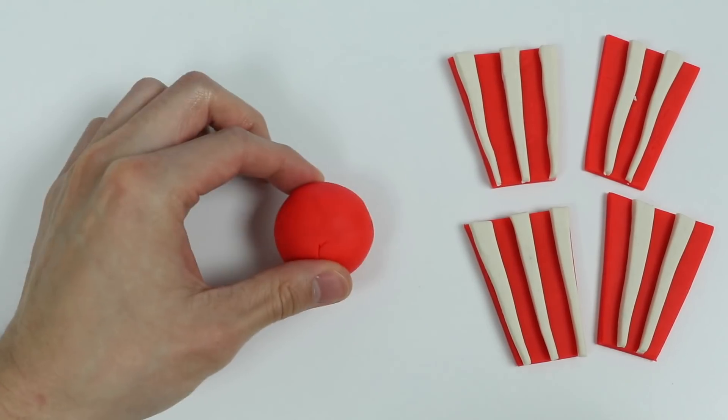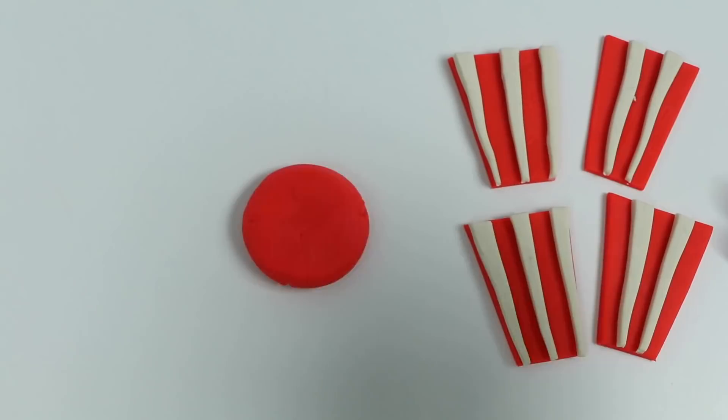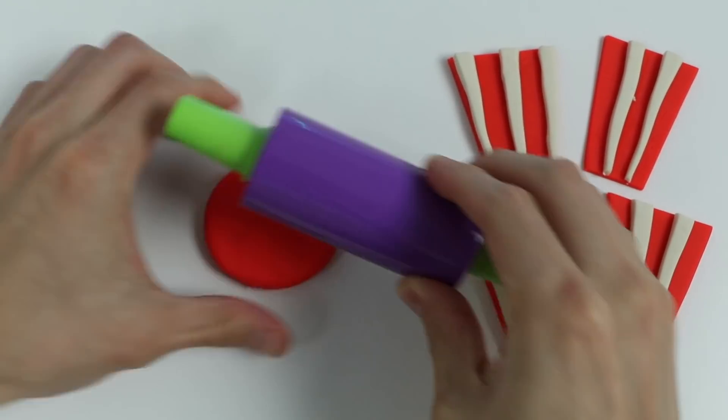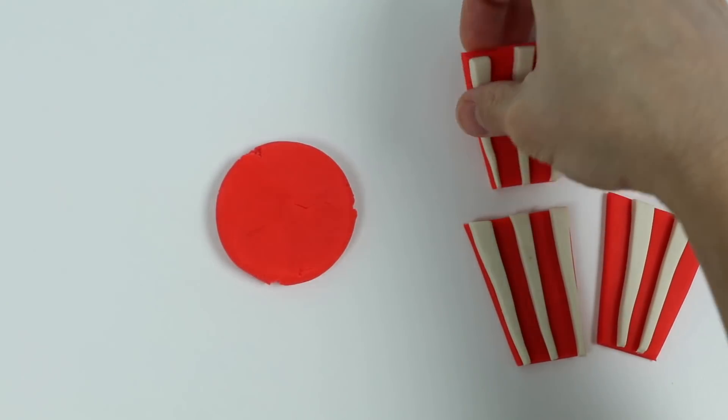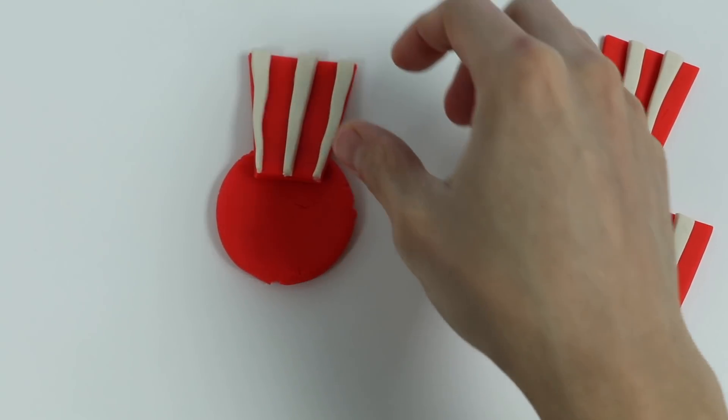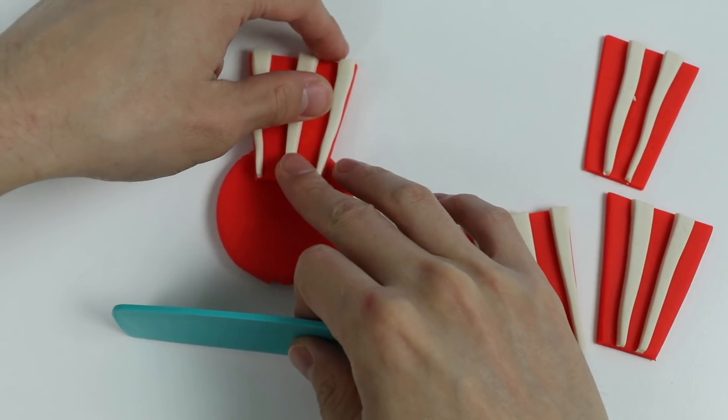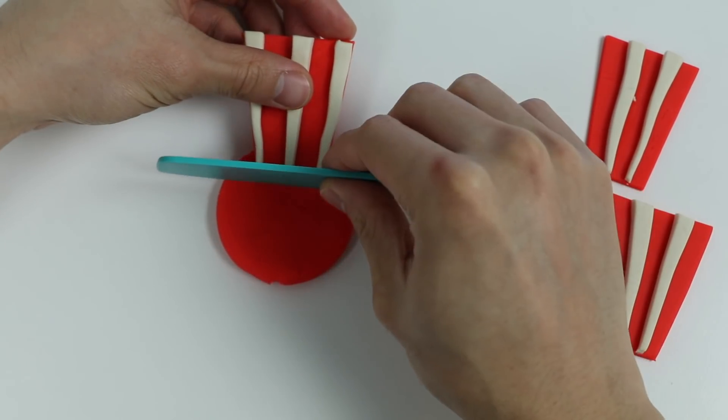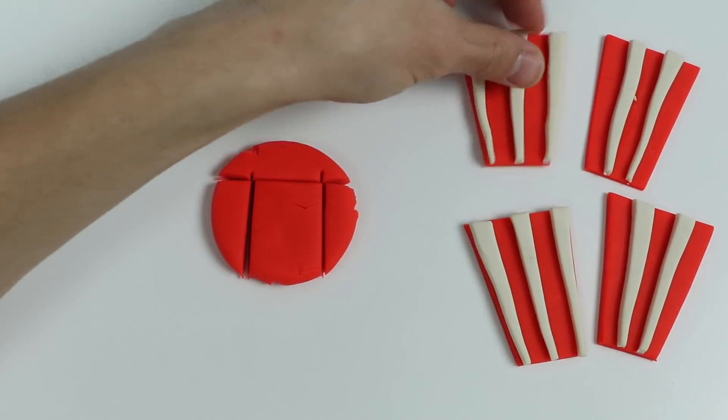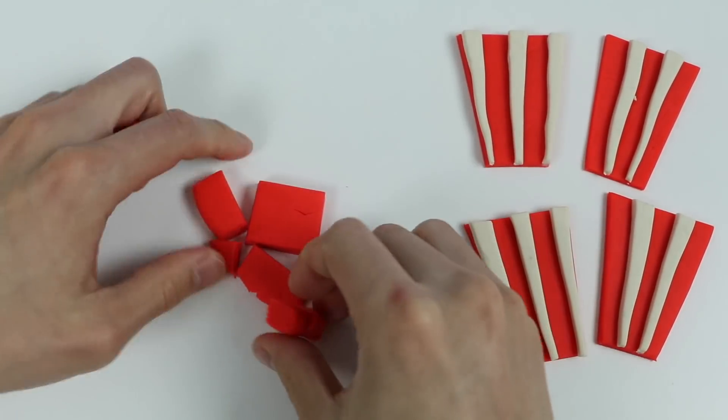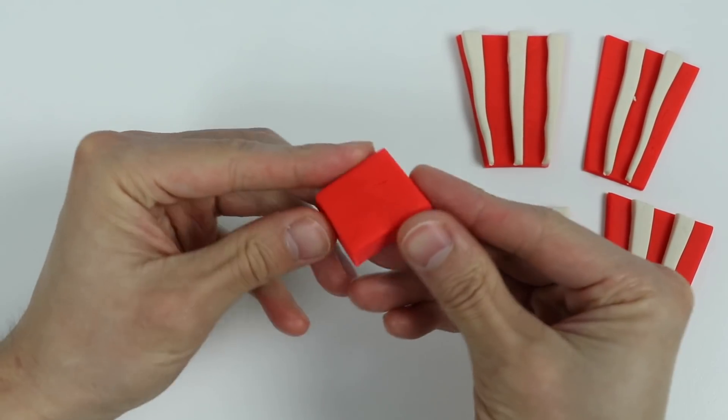Okay, now we have to put our bucket together. Let's roll out this red Play-Doh a bit. Alright, let's put one of the bucket sides here to get a measurement. We need to make the base. Cut out a square. There we go. Here's our base.